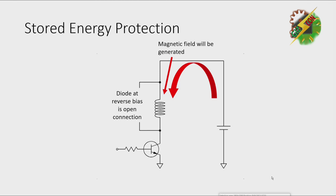Then, when I remove the current at the base, the current at the collector will be removed also.